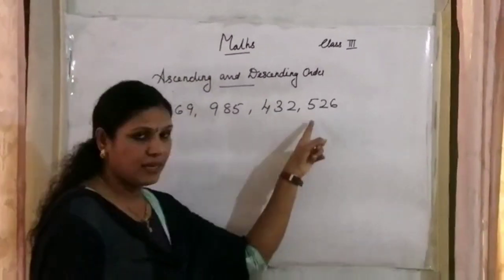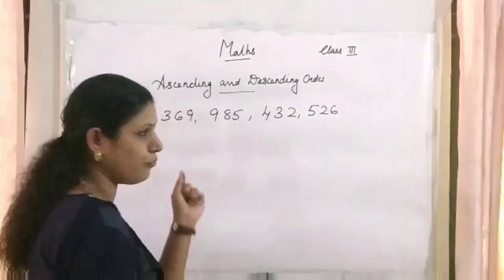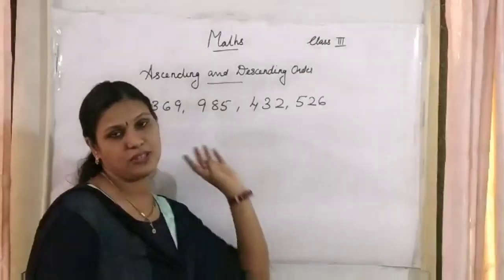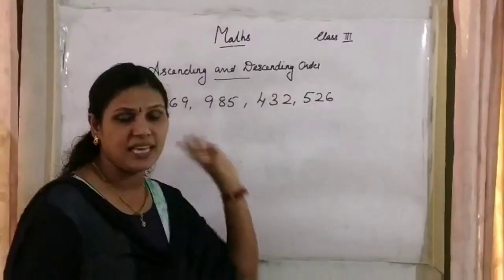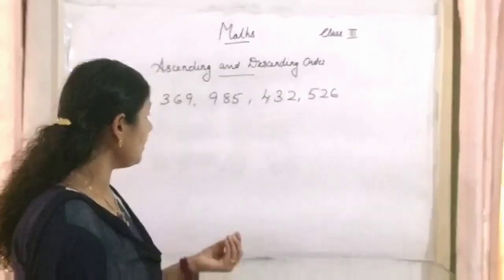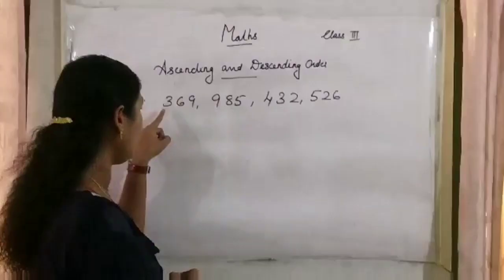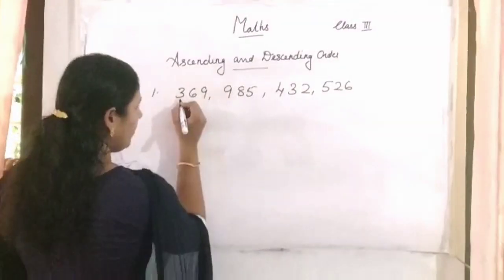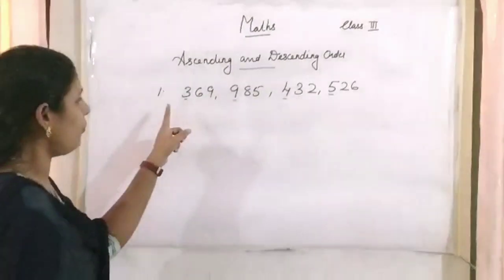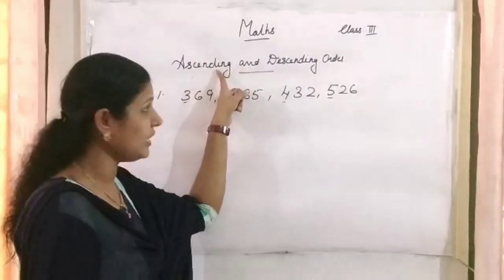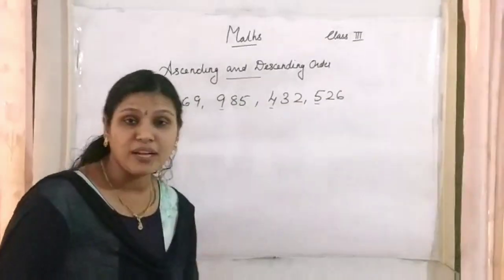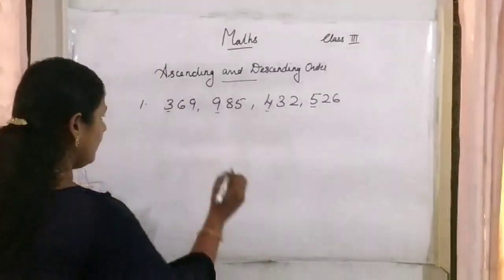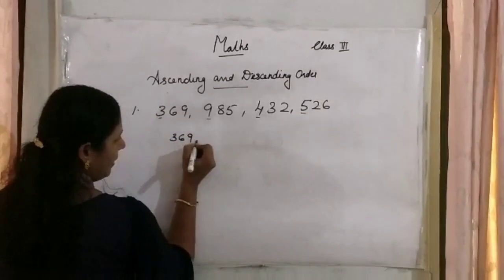For ascending order, first we count the number of digits. Here: 3 digits, here also 3 digits, here 3 digits, here also 3 digits — all digits are the same. Next, we select the highest place value, which is 100. The hundreds-place digits are 3, 9, 4, and 5. For ascending order, which is the smallest? 3. So we write 369 in the first place.